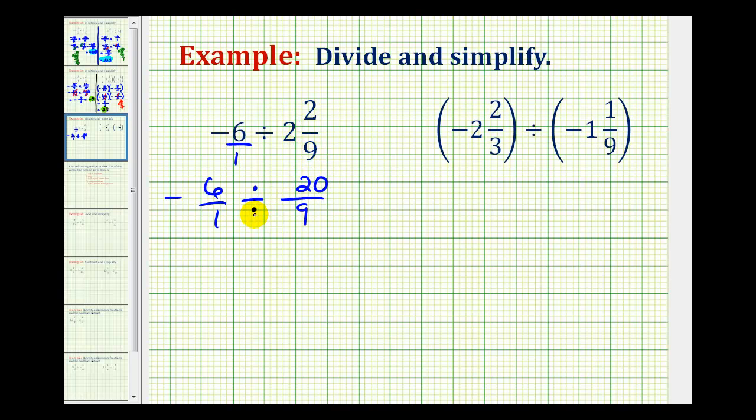And now instead of dividing by 20 ninths, we're going to multiply by the reciprocal of 9 20ths. So we'd have negative six over one times nine over 20.